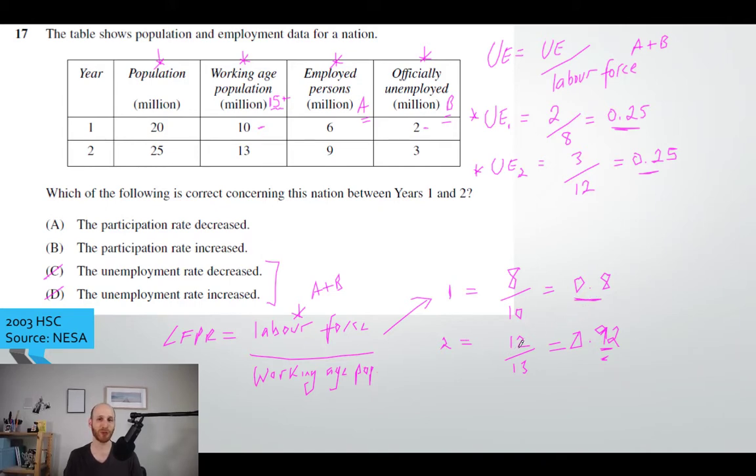For the second one, year two, you can see the size of the labor force A plus B is 12, working age is 13, wow - 92 percent of people are in the workforce. So we can see here between the years the participation rate has increased from year one to year two. Hopefully this is clear. If you need to try it yourself, have another look through the calculations. The key thing is to be very clear about the formulas, because in the HSC in New South Wales for economics, no one's giving you any formulas.